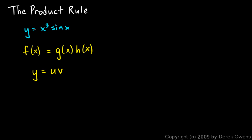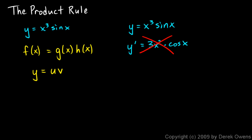Before I show you the product rule, let me show you what you cannot do. If you have y equals x cubed times the sine of x, you can't say y prime is going to be the derivative of x cubed times the derivative of the sine of x. That is wrong.